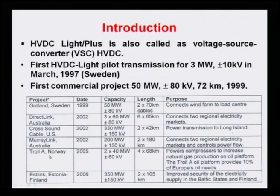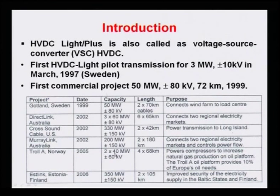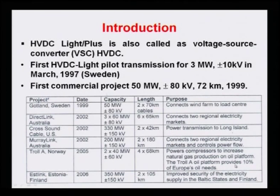The Troll A project in Norway in 2005 used a 2 × 40 MW bipolar arrangement, giving a total of 80 MW over 68 kilometers using four cables. This was used to power compressors to increase natural gas production on the Troll oil platform, which provides 10 percent of Europe's oil.